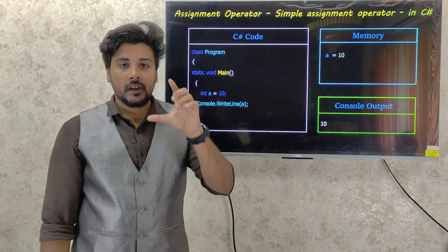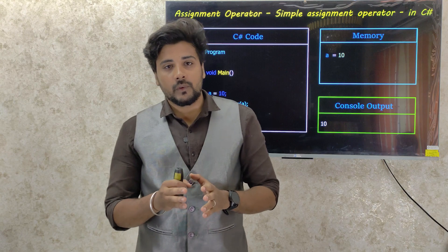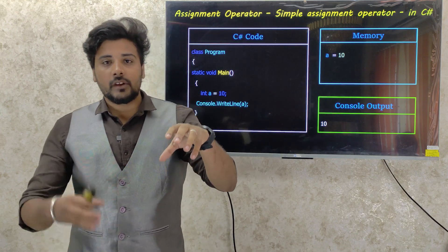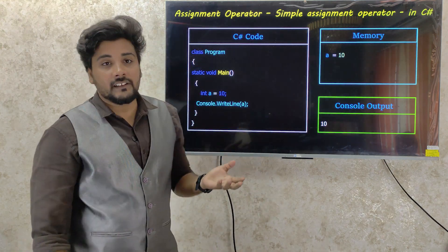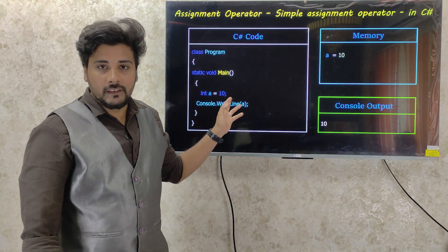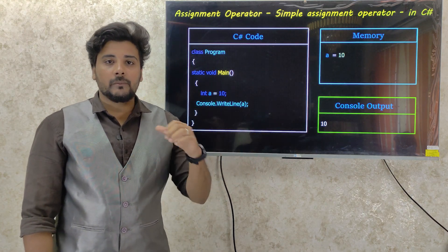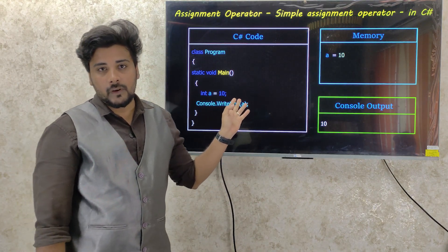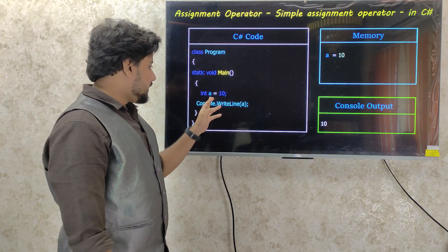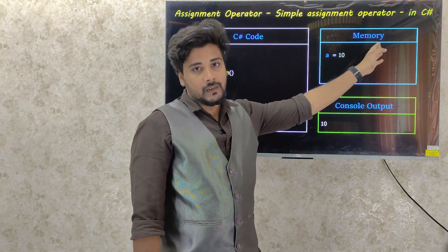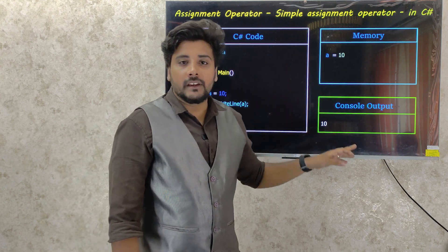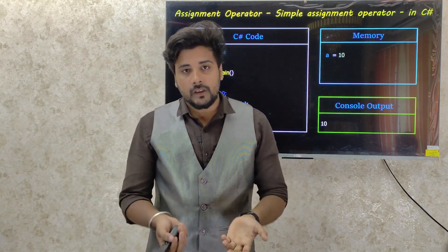We will assign a variable by the same data type. We will assign a variable to a variable, assign a variable name. We will get the integer, string, character, floating points, and assign a variable name. We will fix the value of the variable. In this program, we will get the integer a equal to 10, and it will be assigned a variable with 10. This means we will get the integer number 10.